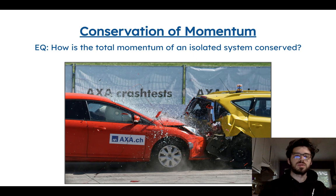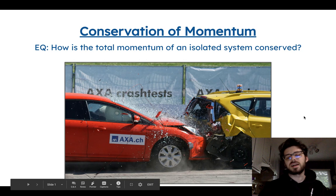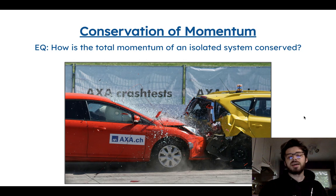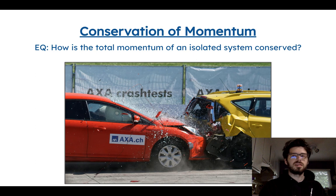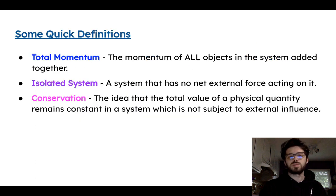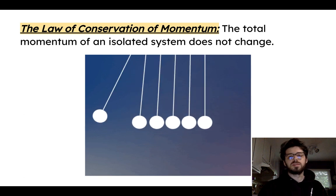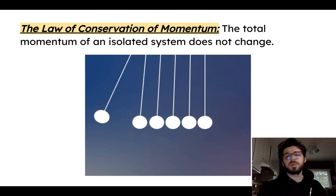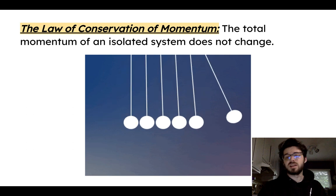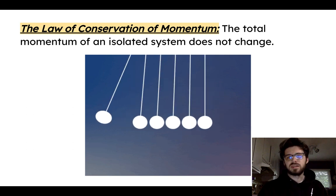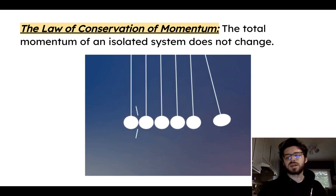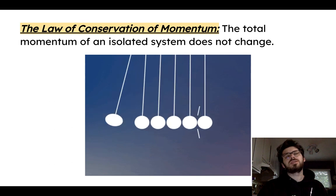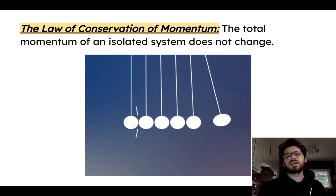We're going to explore that in the realm of collisions. Hopefully you've never been in a car accident, but we're going to look at cars and objects colliding with each other to gain a better idea of how this works. Here's the law of conservation of momentum: the total momentum of an isolated system does not change. Consider that our hypothesis for now — we'll test what the constraints of conservation of momentum are.